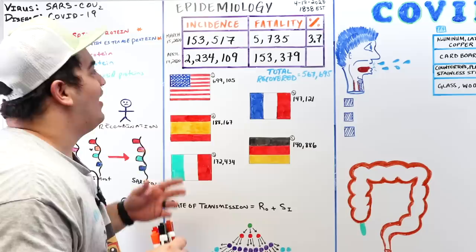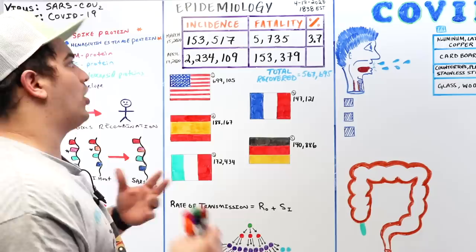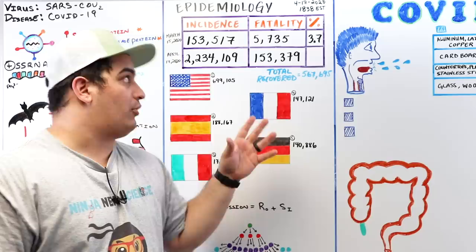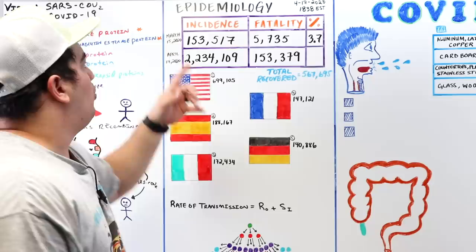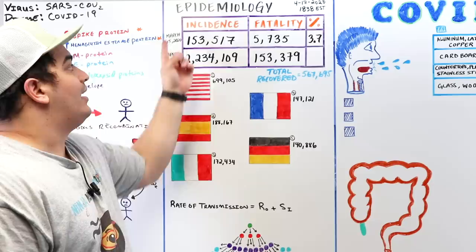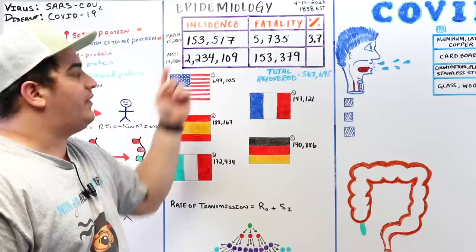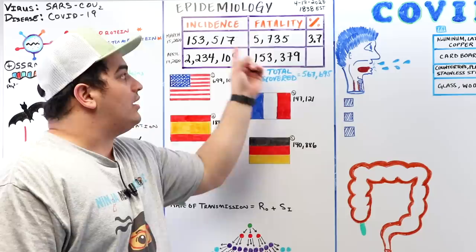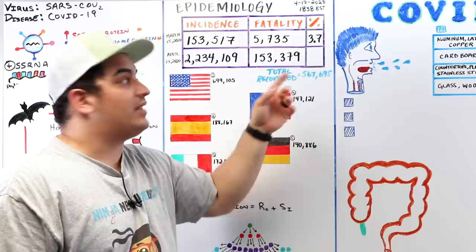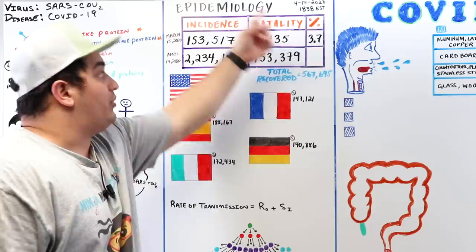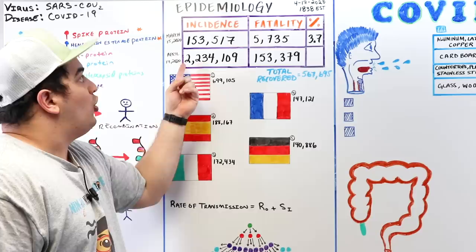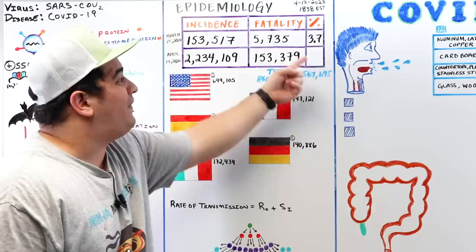Now for the epidemiology. Data from the Johns Hopkins Data Tracker as of April 17, 2020 at 6:38 AM Eastern: on March 15, 2020 there were 153,517 cases and 5,735 deaths, giving a case fatality rate of 3.7%. As of April 17, there were 2,234,109 cases and 153,379 deaths — a case fatality rate of approximately 6.9%.